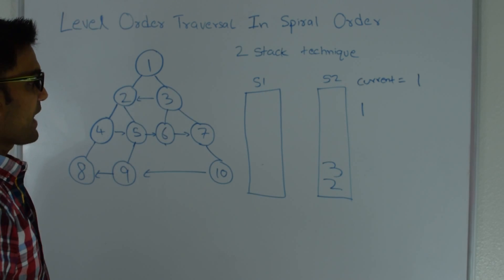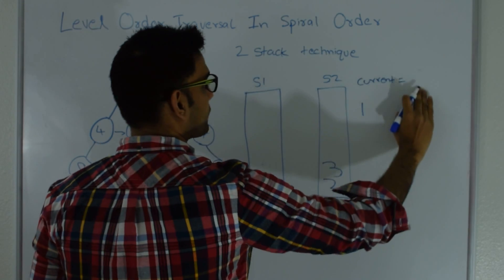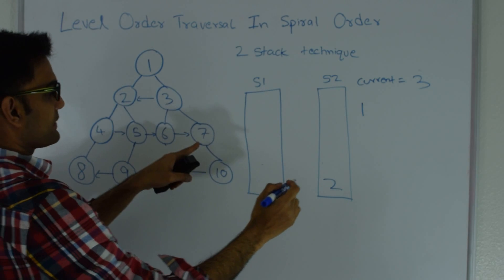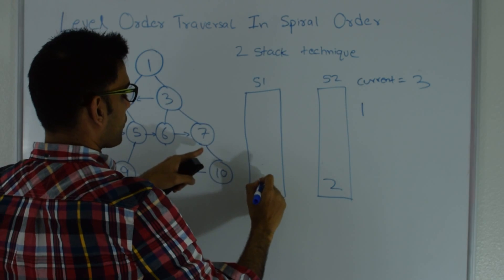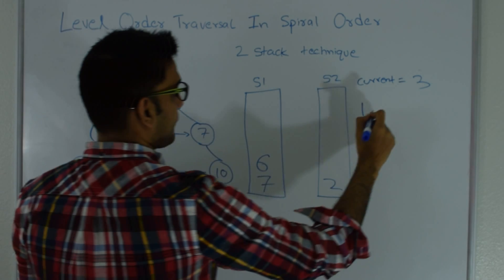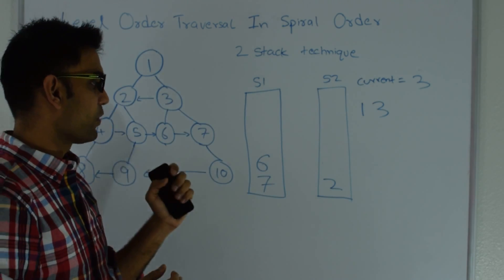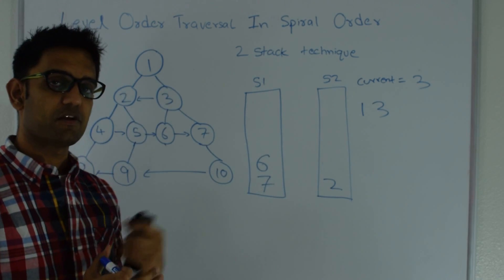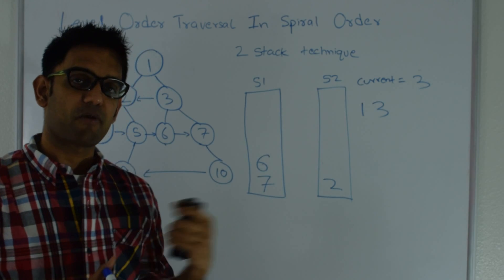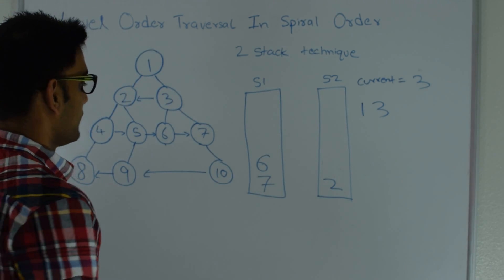As soon as stack 1 is empty, I move on to stack 2 and pop from it — current becomes 3. If 3 has a right child I push that into stack 1, and if 3 has a left child I push that into stack 1, then I print 3. Notice: when popping from stack 1 we push left first then right into stack 2; when popping from stack 2 we push right first then left into stack 1.